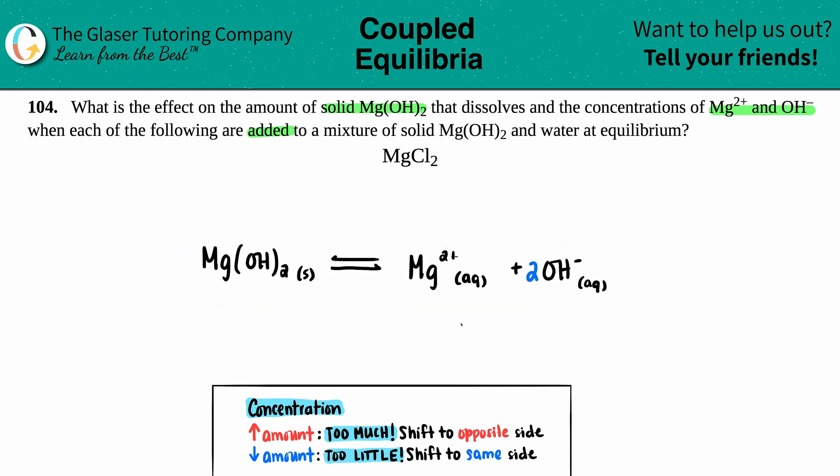So first things first, this is an ionic compound. What does this break down into? MgCl2 is going to break down into two things. It's going to break down into the Mg2+ and the Cl-. Now, it does not matter that we have two chlorines here. Just know what the ions are.